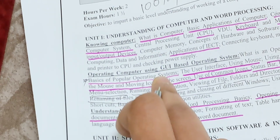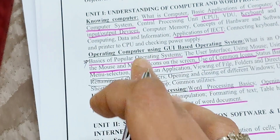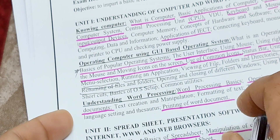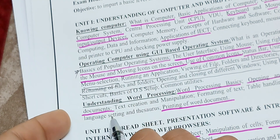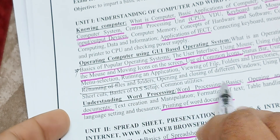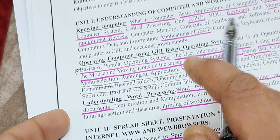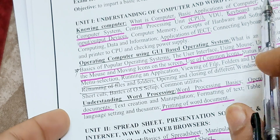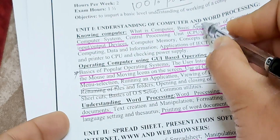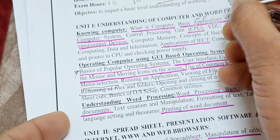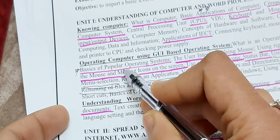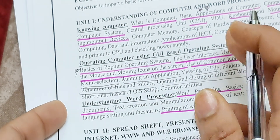For word processing: opening and closing of documents is important, and printing of a word document is also important. To summarize Unit 1: the three answers to focus on are — first, components of computer system; second, basic applications of computer (these two are the most important); and third, basics of a popular operating system.